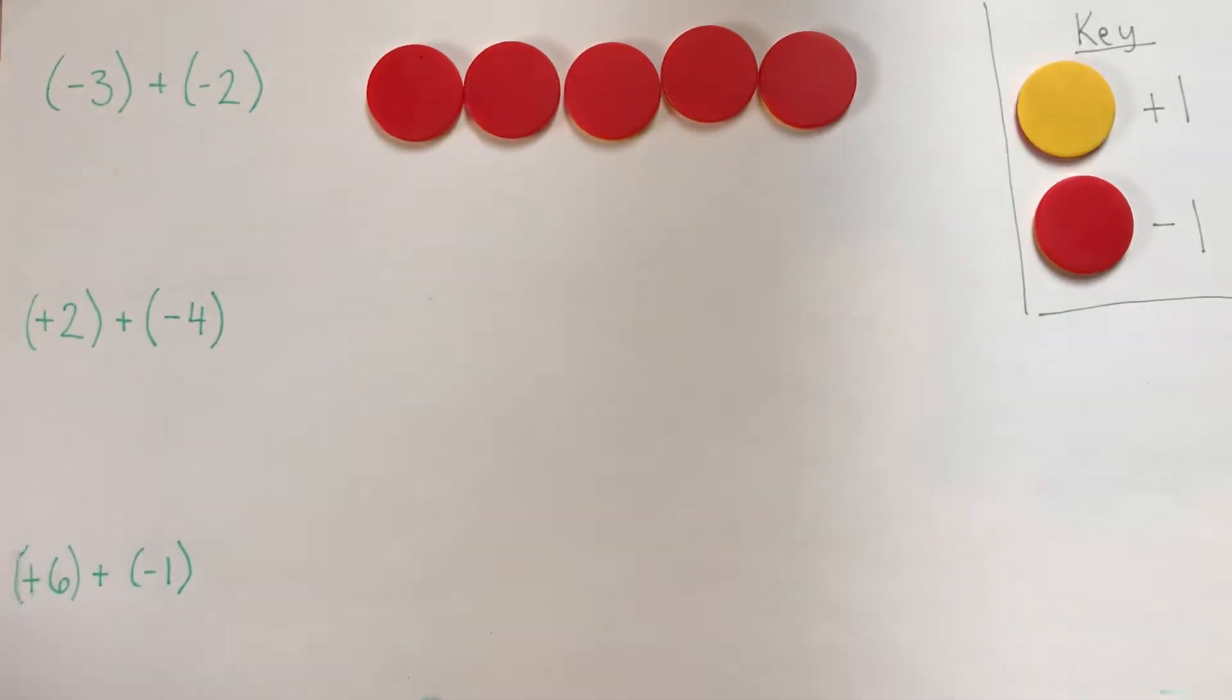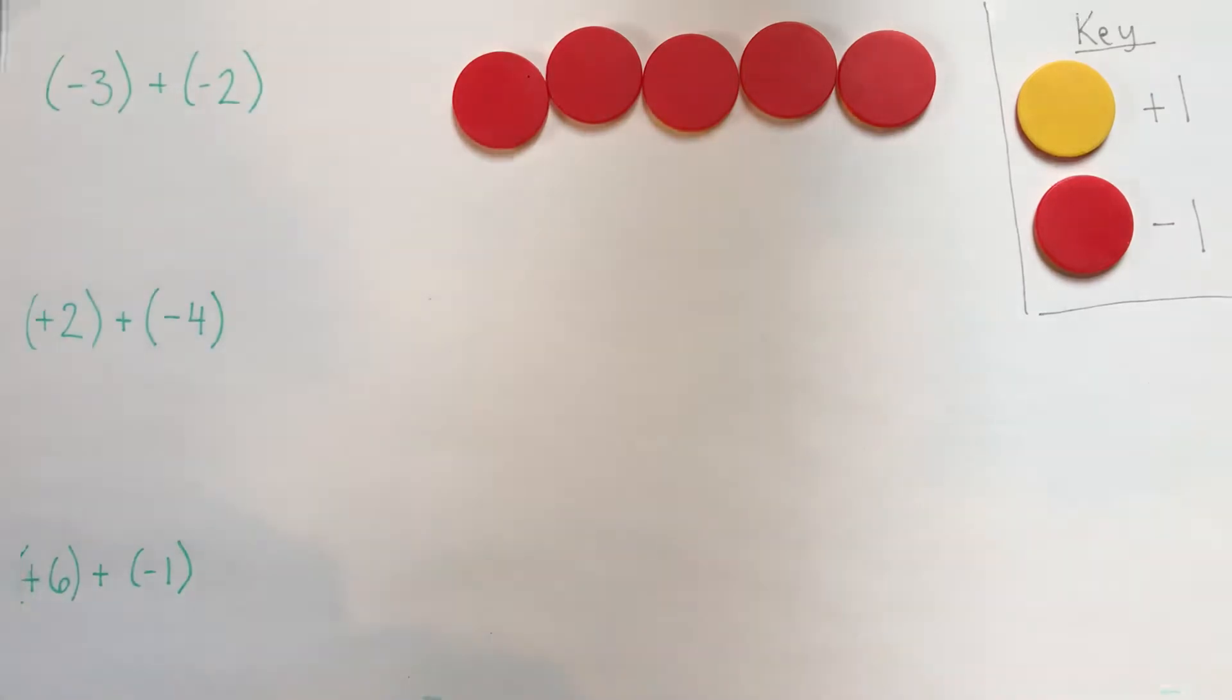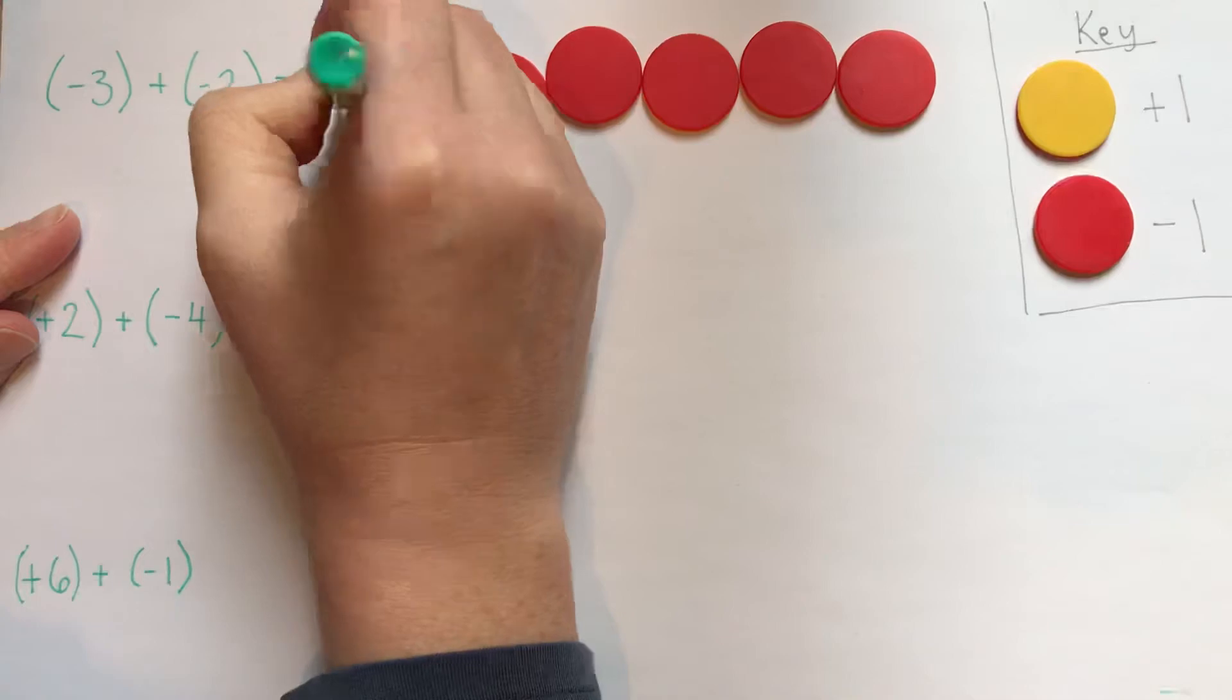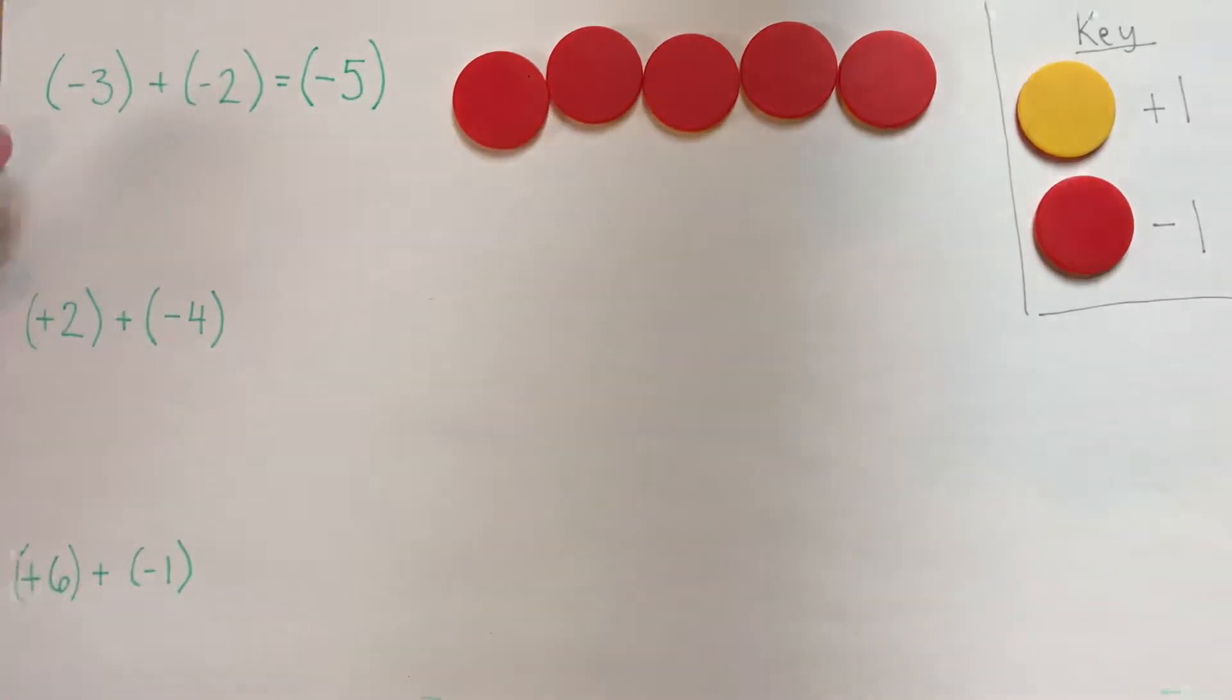That one is fairly straightforward about what this represents. If you look at it, it's clearly five negatives, or negative five. The brackets around the answer aren't necessary. You can write them if you think it looks clearer, or leave them off.